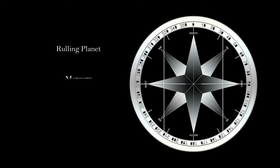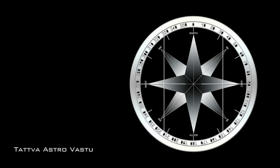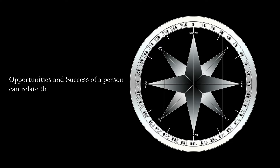Is direction ke ruling planet Mercury aur lord Kuber hain. Planet Mercury, jise Budh grah ke naam se jaante hain. Vastu Shastra mein is direction ko kisi vyakti ke jeevan mein milne vali opportunities aur success ke saath jod kar dekha jata hai.